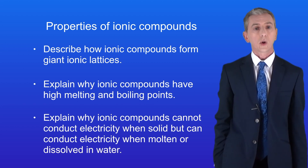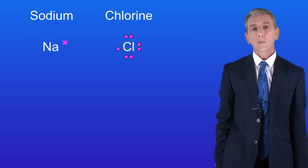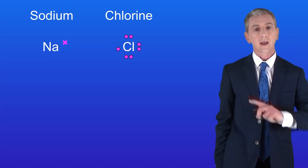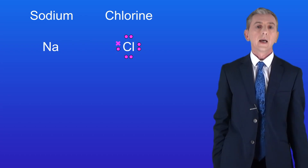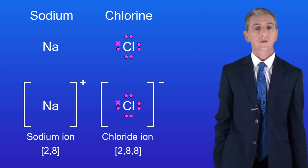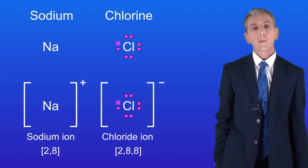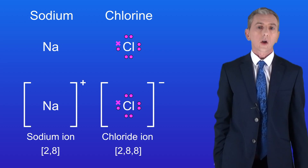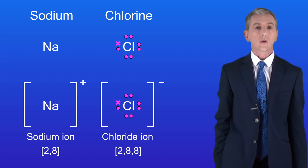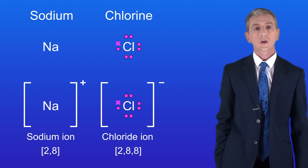We've been looking at ionic bonding which takes place when a metal reacts with a nonmetal. A good example is the reaction between sodium and chlorine. In this reaction one electron passes from the sodium atom to the chlorine atom. At the end the sodium atom has a one positive charge and we now call this the sodium ion. Remember that an ion is an atom with a charge. The chlorine atom now has a one negative charge and we call this the chloride ion. In this reaction we make the compound sodium chloride.